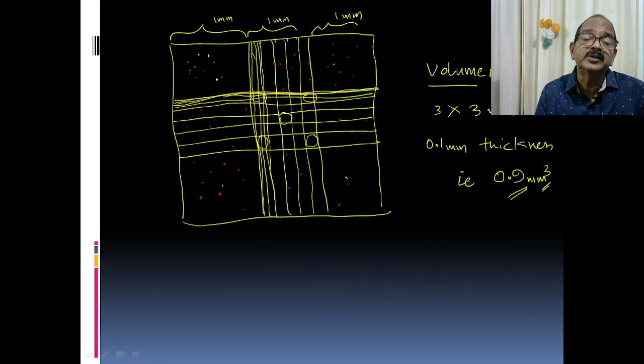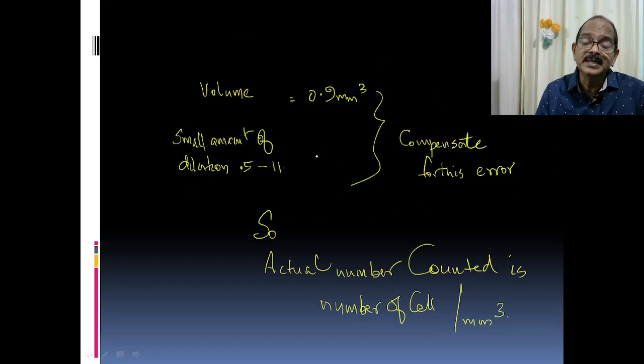There is no need to bother about the complex counting methods used in RBC counting—the small squares, the 80-count areas, or corner counts. The actual number of cells over this area is the number of cells per cubic millimeter.